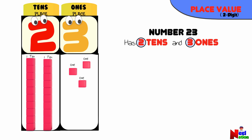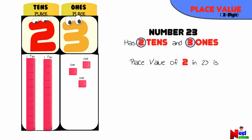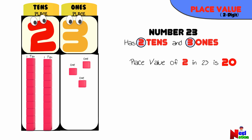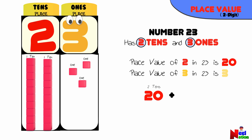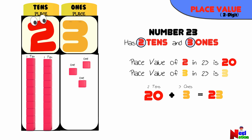As there are two tens in the tens place, the place value of 2 in 23 is 20. And the place value of 3 in the number 23 is 3. So 20 plus 3 makes a total of 23. When you add these place values together, you get the total value of the number.